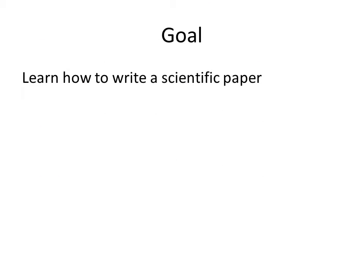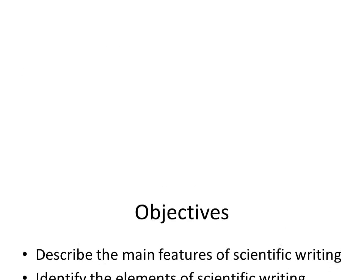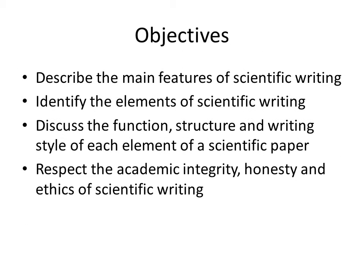My goal is for you to learn how to write a scientific paper. My objective is for you to describe the main features of scientific writing, identify the elements of scientific writing, discuss the function, structure, and writing style of each element of a scientific paper, and respect the academic integrity, honesty, and ethics of scientific writing.